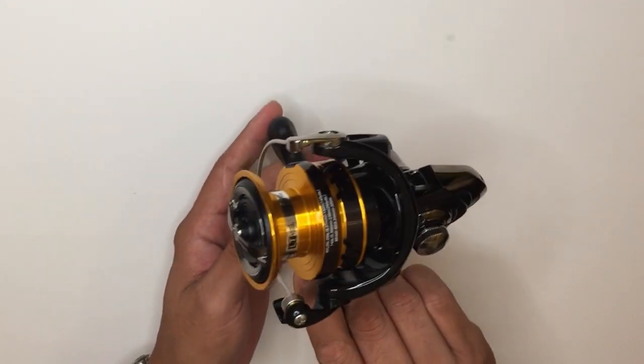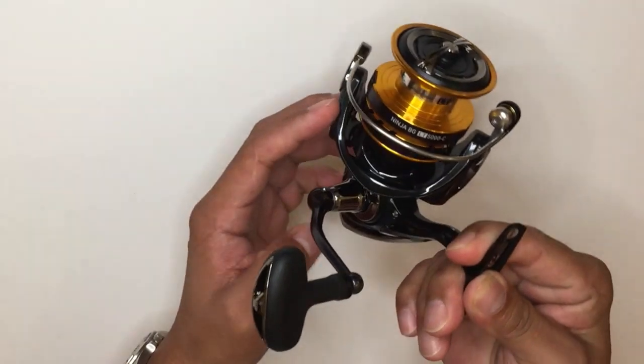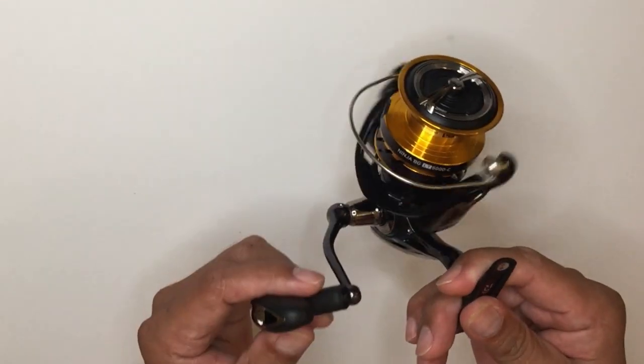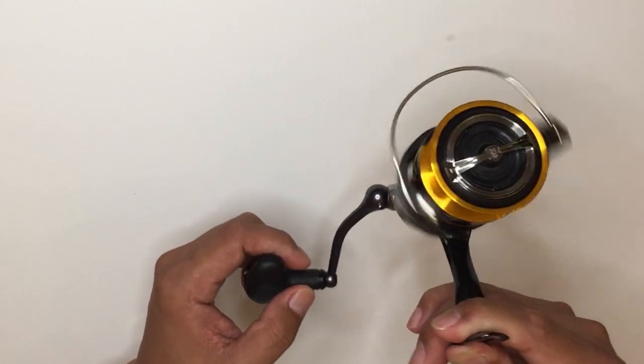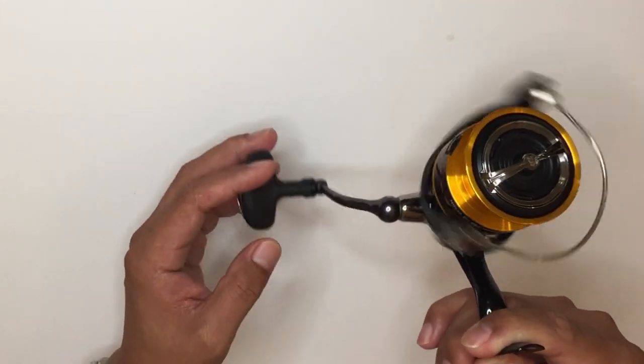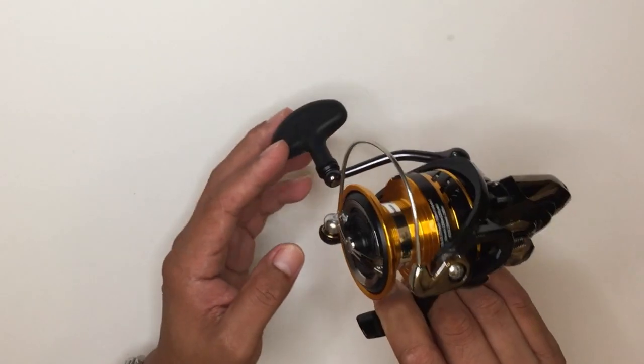For this 5000 model, the weight is only 275 grams. The size is available for these wheels from 2500, 3000, 4000,